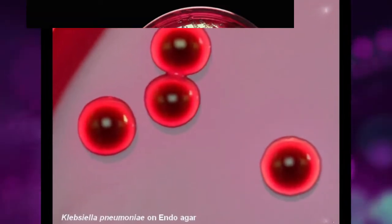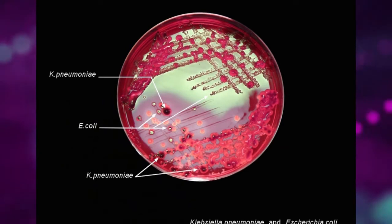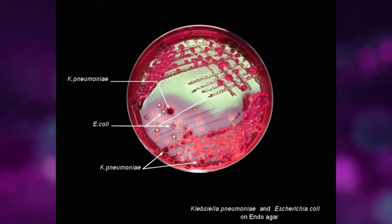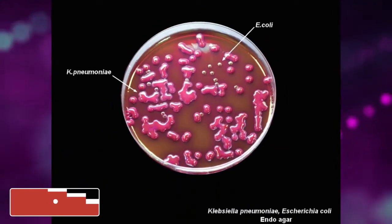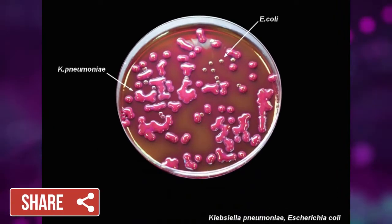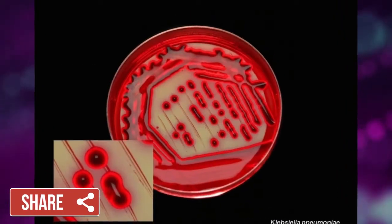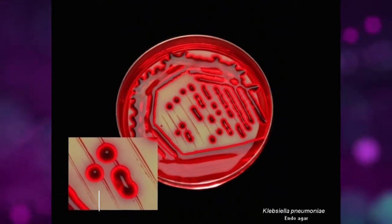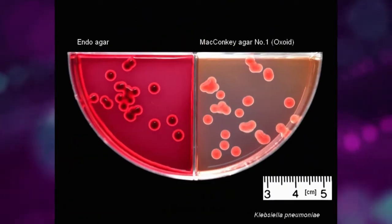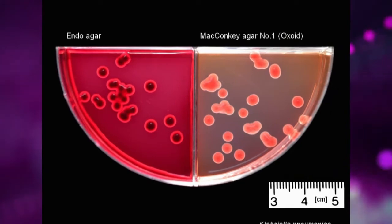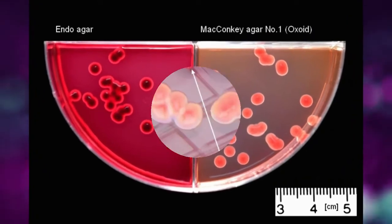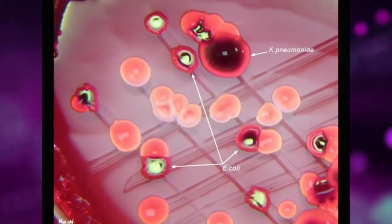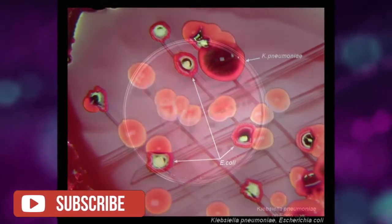Large, mucous colonies after 24 hours of cultivation in aerobic atmosphere at 37 degrees Celsius. Cultivation in an aerobic atmosphere, Klebsiella pneumoniae usually gives larger, mucoid and lactose-positive colonies.